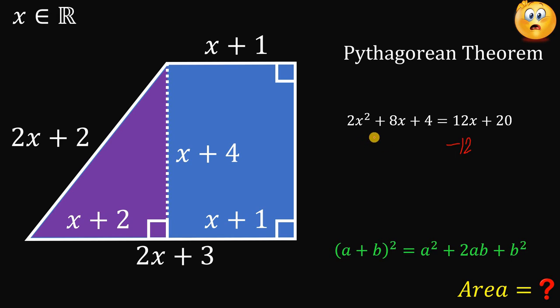Now, subtract 12x on both sides. So, the left-hand side becomes negative 4x. And subtract 20 on both sides, and we have an equation 2x squared minus 4x minus 16 equals 0. Now, let's focus on this equation.